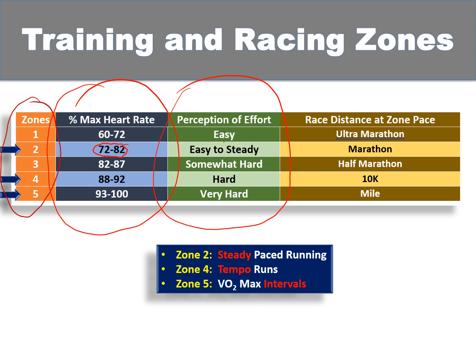I'll talk about max heart rate in a little bit. Zone two is 72 to 82 percent of your maximum heart rate. What it should feel like perception-wise is easy to steady — at the lower end it should feel easy, at the upper end it should feel steady. It's not really easy, but it's definitely not hard. It's steady. This is sort of like long run pace if you're going out for a nice long run — you're not going to be suffering the whole run, just having a nice steady enjoyable run.